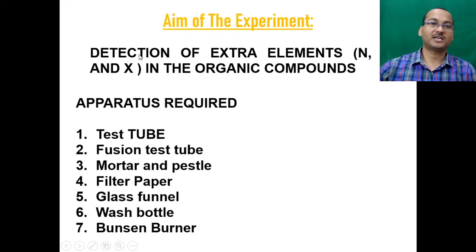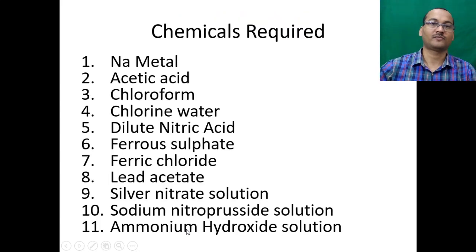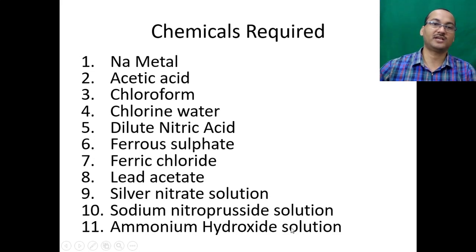The aim of the experiment is detection of extra elements like nitrogen, sulfur, and halogens in the organic compound. Apparatus required: test tube, fusion test tube, mortar, vessel, filter paper, glass panel, wash bottle, Bunsen burner. Chemicals required: sodium metal, acetic acid, chloroform, chlorine water, dilute nitric acid, ferrous sulfate, ferric chloride, lead acetate, silver nitrate solution, sodium nitroprusside solution, and ammonium hydroxide solution.